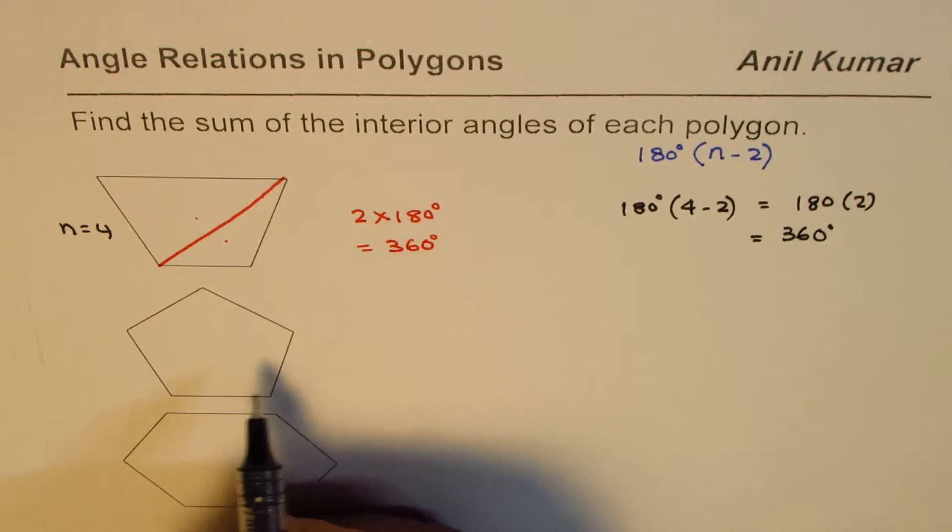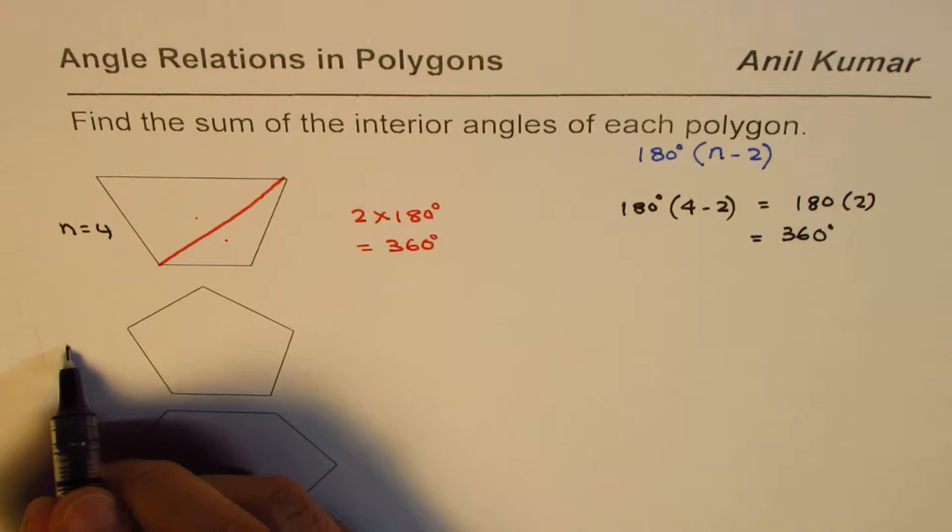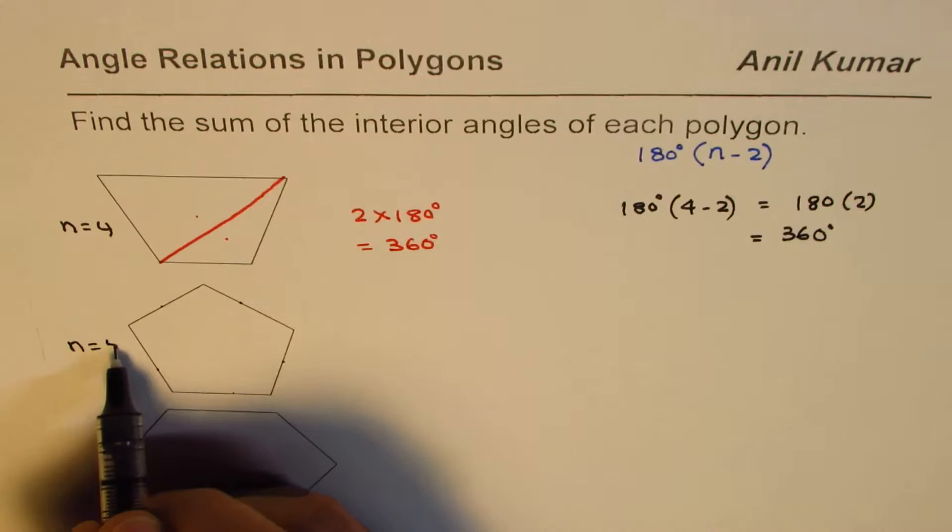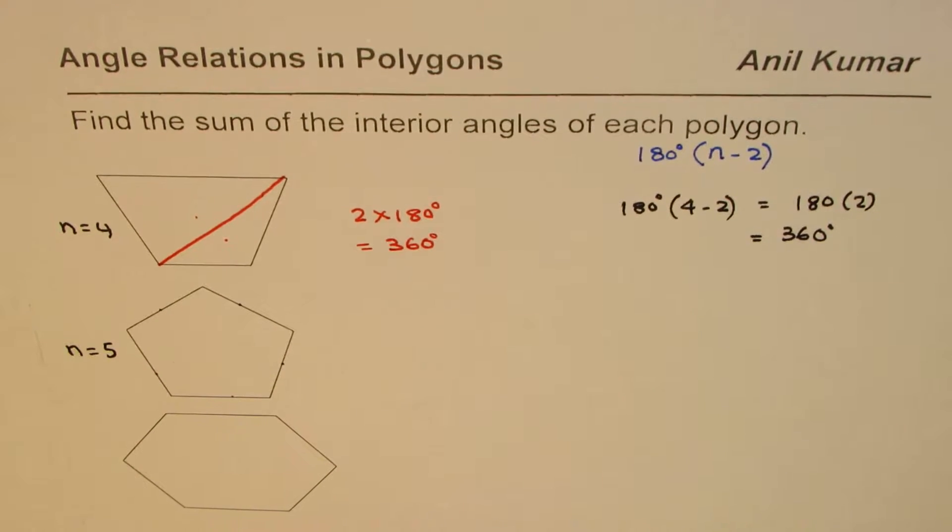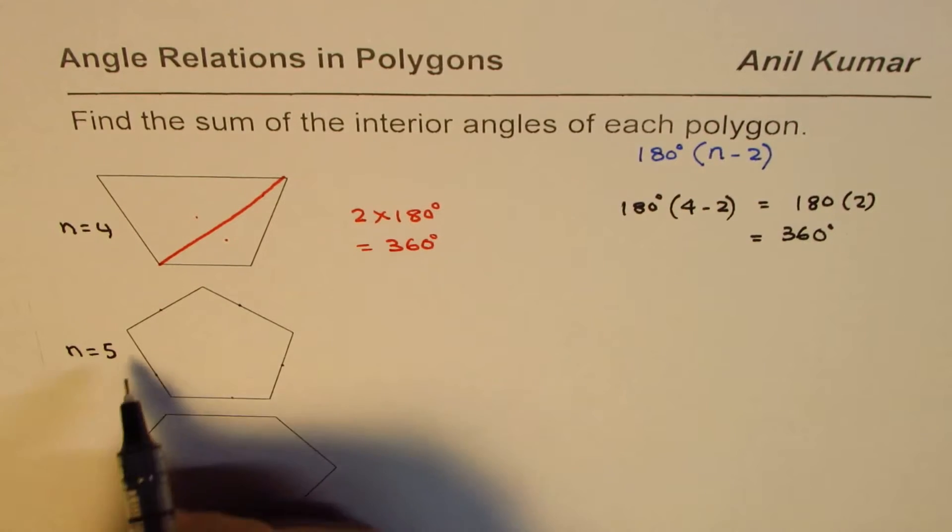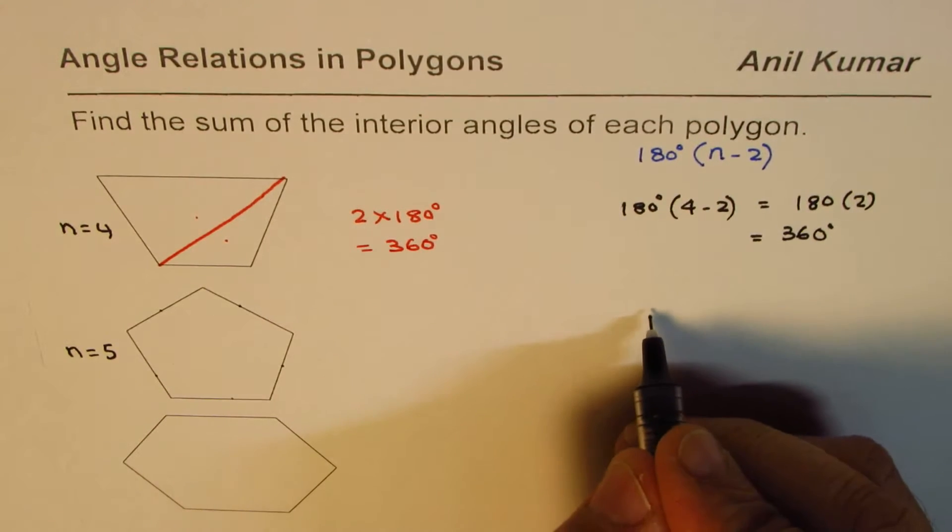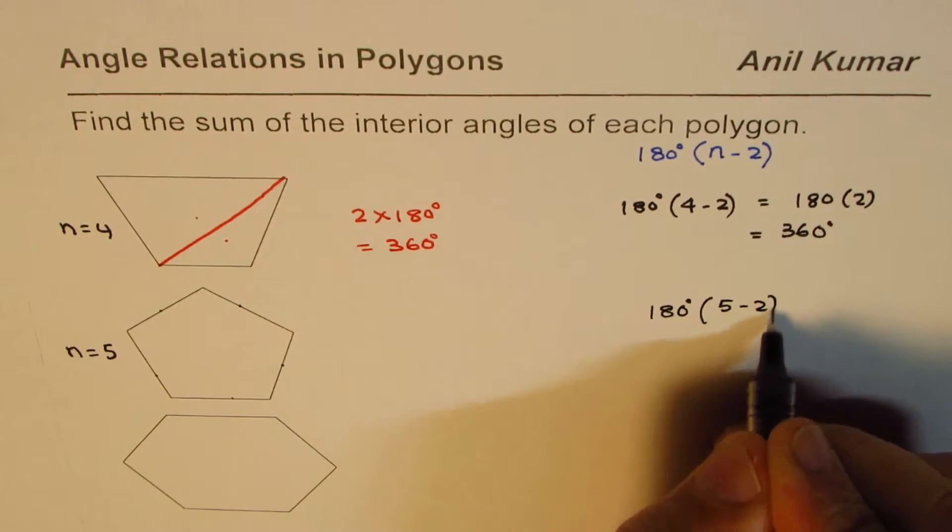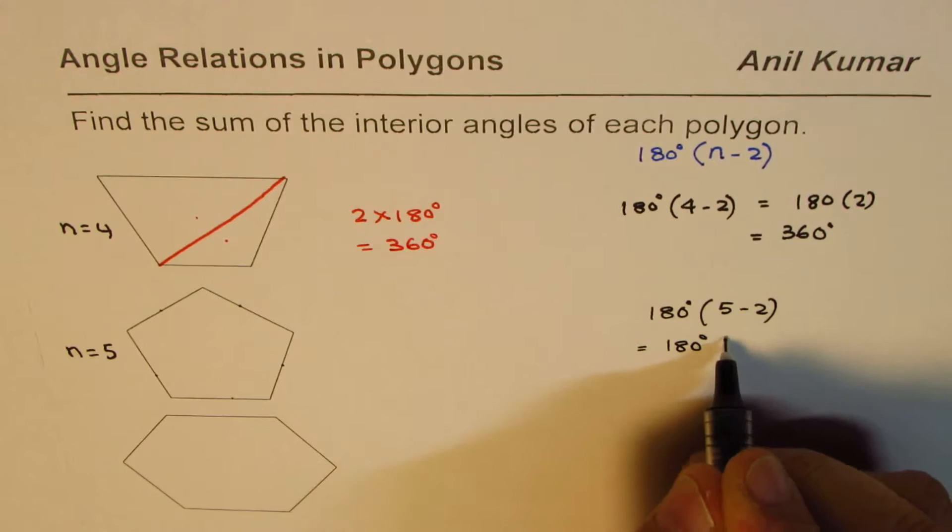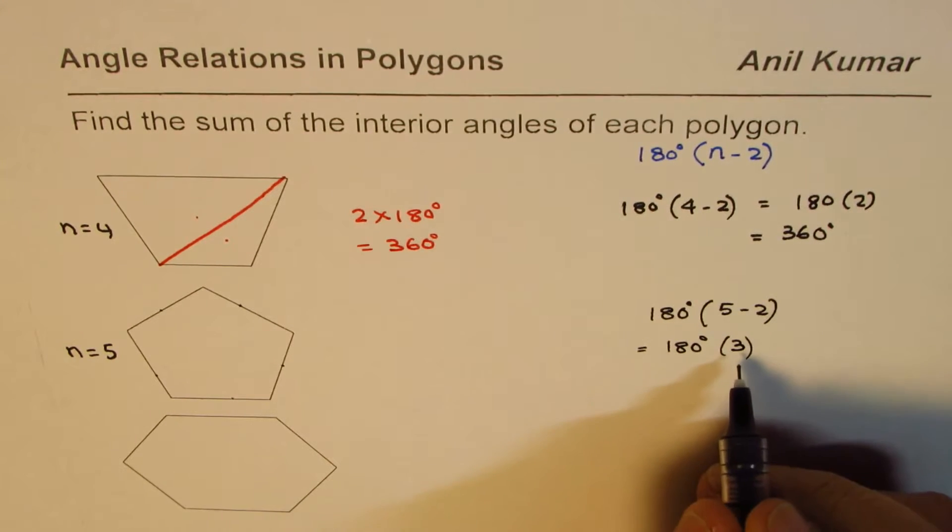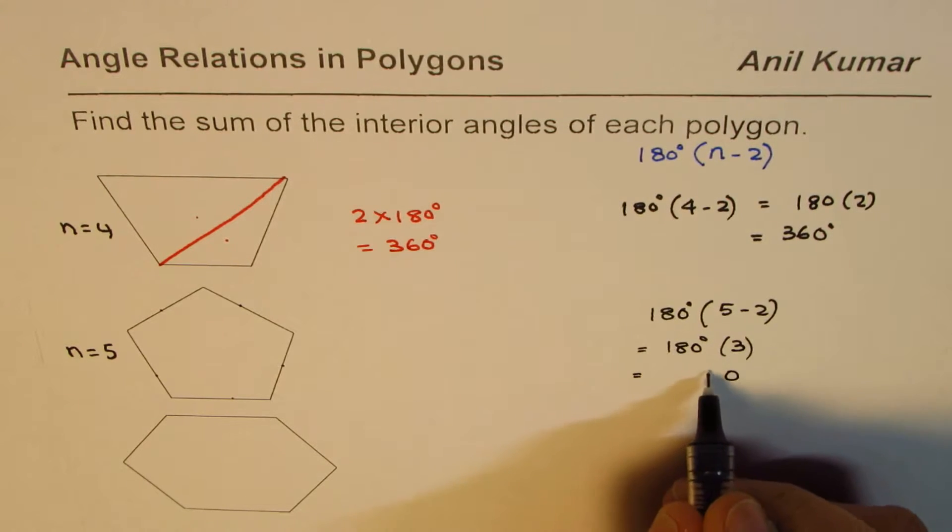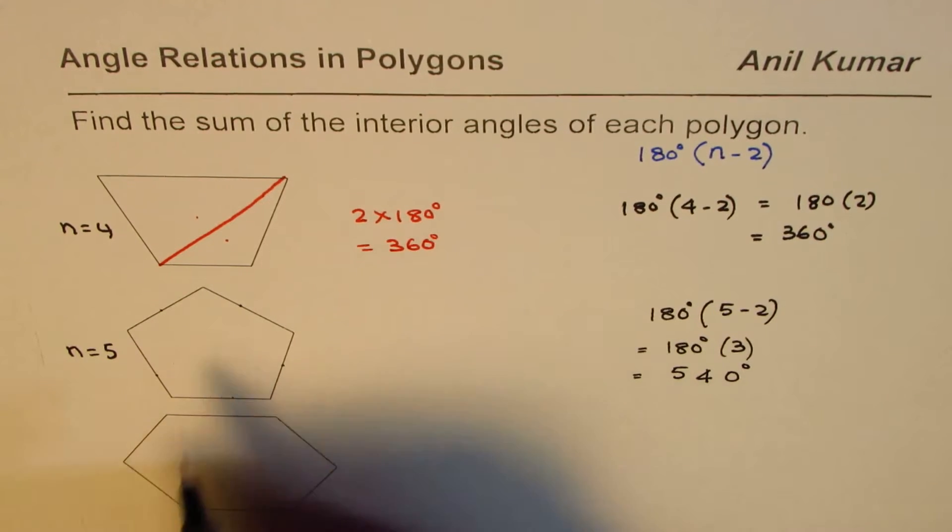Let us look at the next example. It has 1, 2, 3, 4, 5 sides. It is a regular pentagon with all sides equal, so n equals 5. If you apply the formula, you get 180 degrees times 5 minus 2, which is 180 degrees times 3. Using a calculator to multiply, 3 times 180 equals 540 degrees.